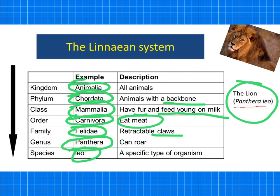In the exam you wouldn't be expected to learn those specific examples, but you would use information given to you to work out the answer. You would need to know the order: kingdom, phylum, class, order, family, genus, and species.